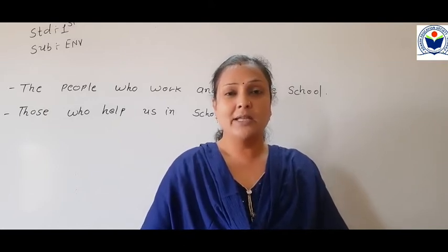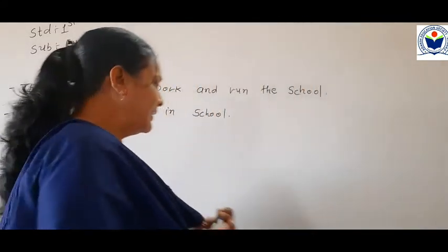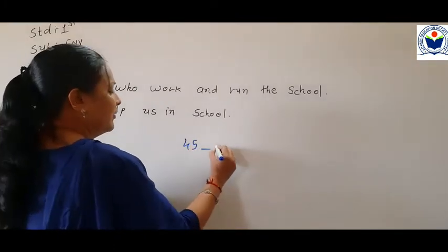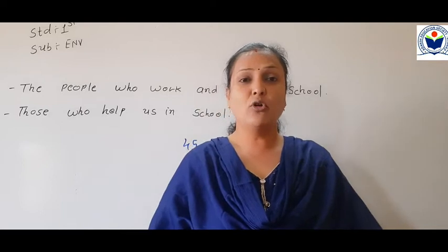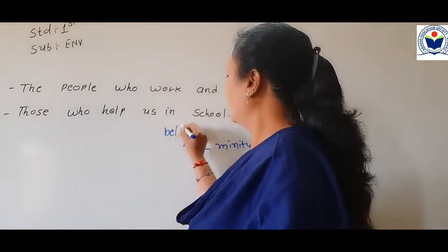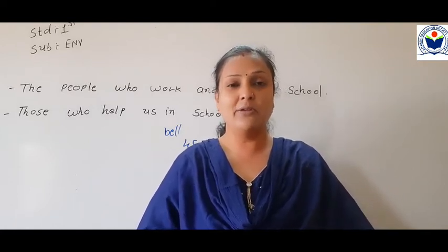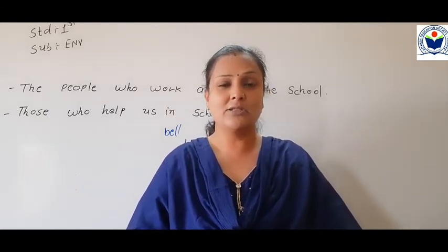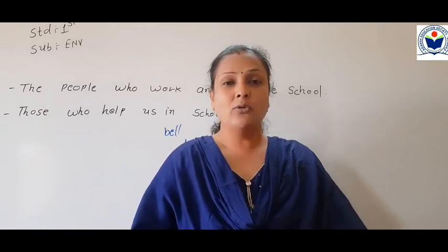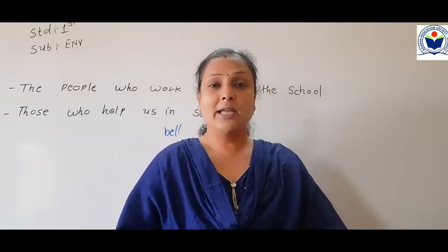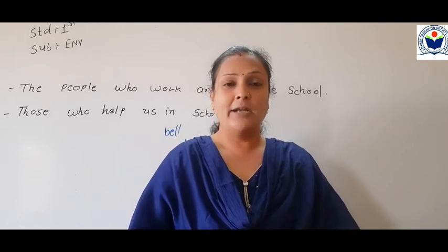School में जब periods आते हैं, तो period 45 minutes का होता है। जैसे ही आपका period complete होता है, bell बजती है — तो आपको पता चल जाता है कि period finish हो गया और next period start होगा। फिर school में बहुत बड़ा garden और playground होता है — garden में बहुत सारे trees और plants होते हैं, उनकी care करनी होती है, तो उसके लिए भी workers रखे होते हैं।